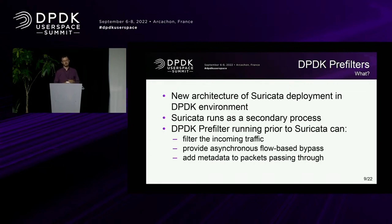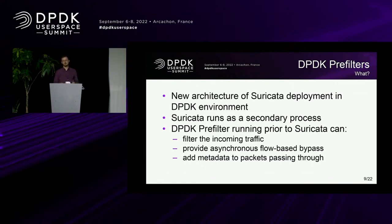So you can insert a rule to the DPDK pre-filter to only allow traffic from a specific IP prefix, and Suricata doesn't really need to know about this. It can also provide an asynchronous flow-based bypass driven by Suricata. Suricata inspects some flow and tells DPDK pre-filter 'I don't want to see this flow anymore,' and the DPDK pre-filter will handle this. The DPDK pre-filter or NIC can also add metadata to packets passing through these systems.